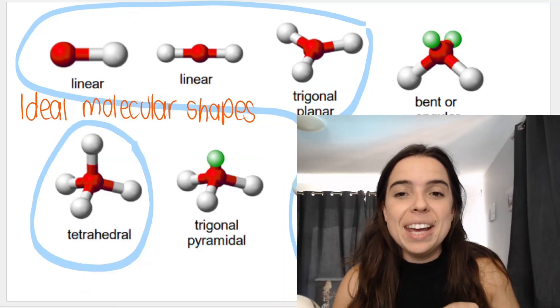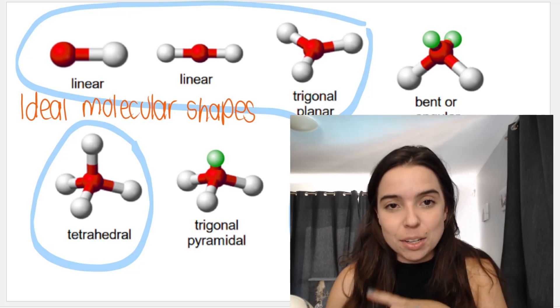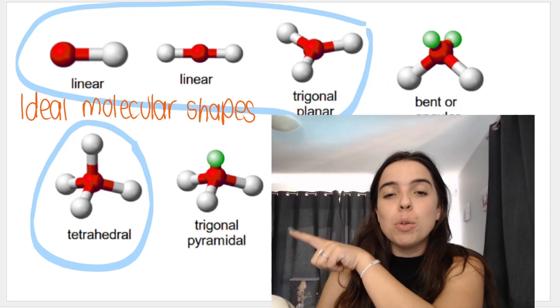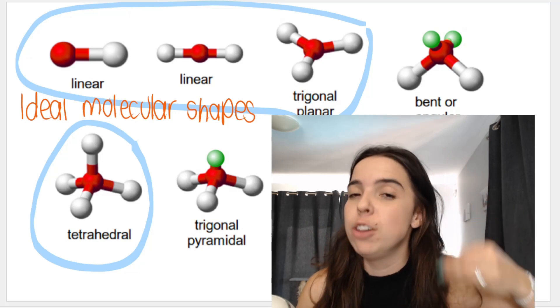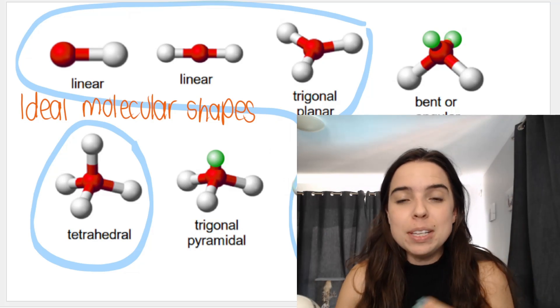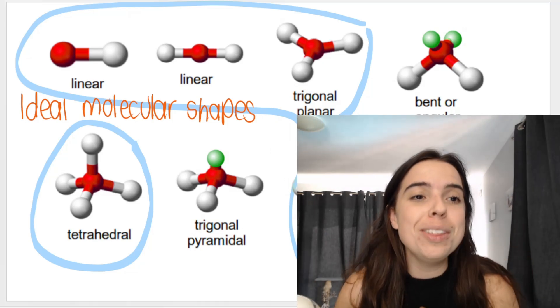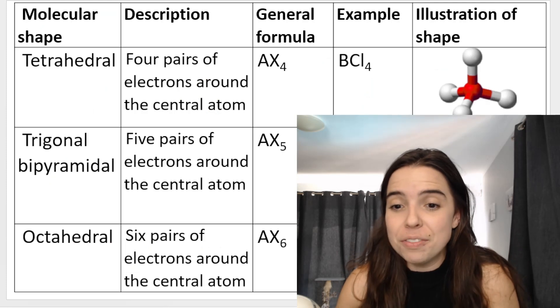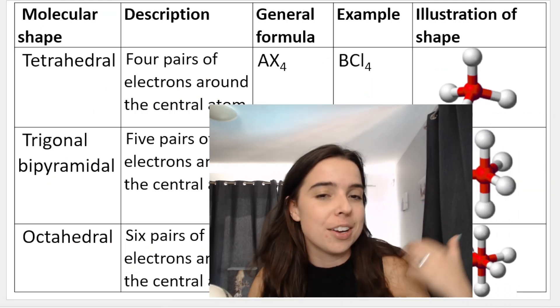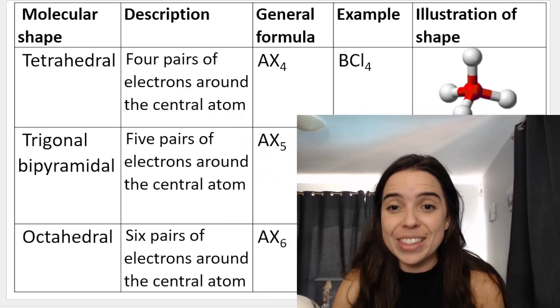The lone pairs would be the little green things. The ideal molecular shapes have no lone pairs on the central atom - central means the middle atom - and the non-ideal molecular shapes, the bent one and the trigonal pyramidal one, they do have lone pairs on the central atom. If you've missed the video where I went over the molecular shapes in detail, I showed the general formula, simulations, descriptions, and examples. Check out the links in the description.